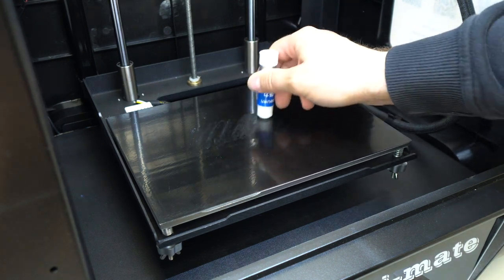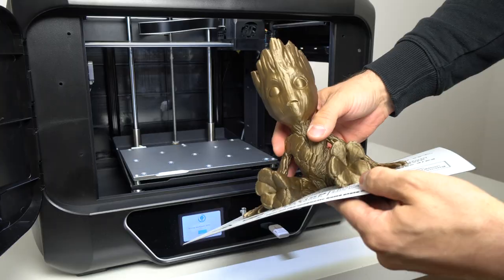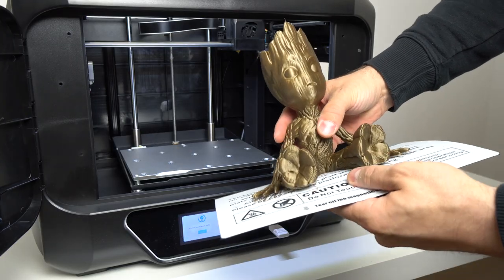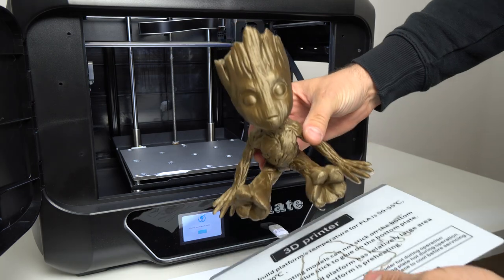By having the flexible build plate, removing the prints from it is very easy. Just bend it in opposite direction and the prints will pop up.